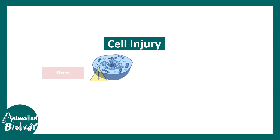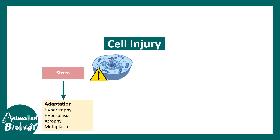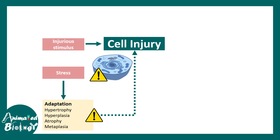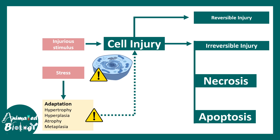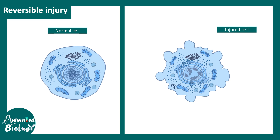Cell injury happens due to stress. There are multiple adaptation strategies like hypertrophy, hyperplasia, atrophy, and metaplasia, covered in detail in another video. When a cell undergoes injury, there could be two types: reversible and irreversible. If reversible, the cell regains its function when the stressor is removed. If irreversible, the cell might undergo necrosis, apoptosis, or other non-repairable damage.